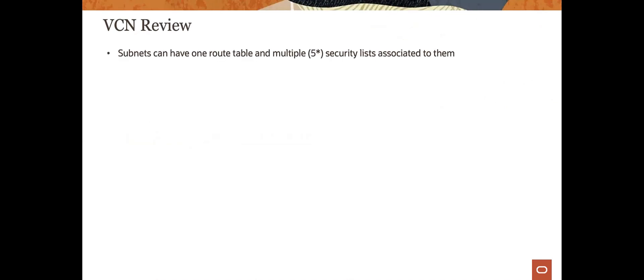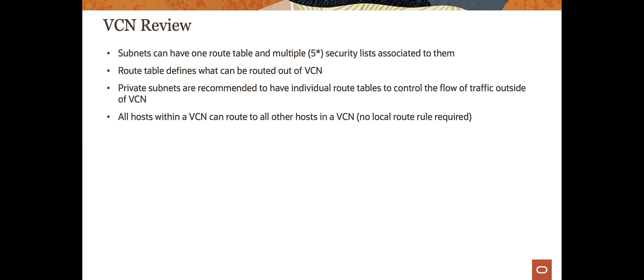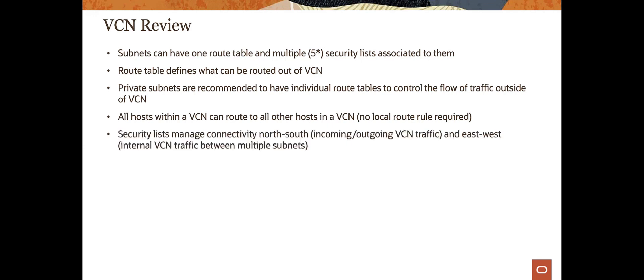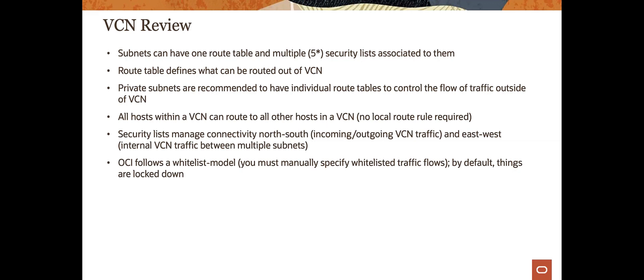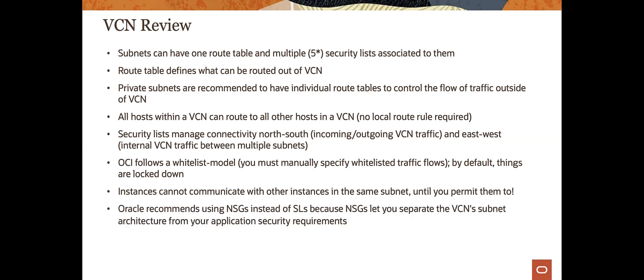Putting it all together: subnets can have one route table but multiple security lists. The route table defines what can be routed out of a VCN — think of it as a map showing traffic where to go. Private subnets are recommended to have individual route tables to control the flow of traffic outside the VCN. All hosts within the VCN can route to other hosts with no rules required. Security lists don't manage routing — they manage connectivity using a whitelist model. Everything is locked by default; you open what you need. Instances cannot communicate with other instances in the same subnet unless you permit it.